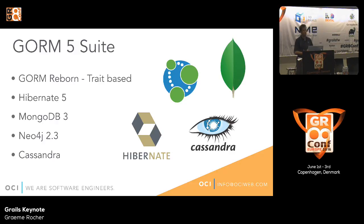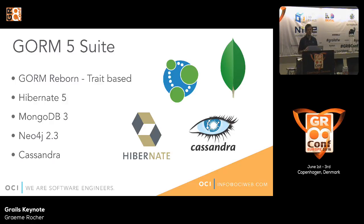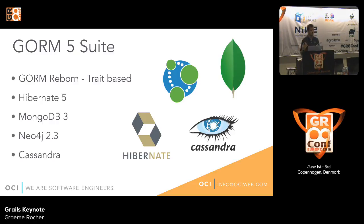I want to talk a bit about GORM 5. In Grails 3.1 we introduced GORM 5, re-architected based on traits. With traits in GORM 5, it's much easier to understand the GORM API. There's a GORM entity trait that defines all of the GORM methods, both instance and static. It's easy to navigate the implementation, the IDE understands navigating into the trait, and it's easy to document using standard Groovy doc — no need for a separate reference section in the Grails docs.